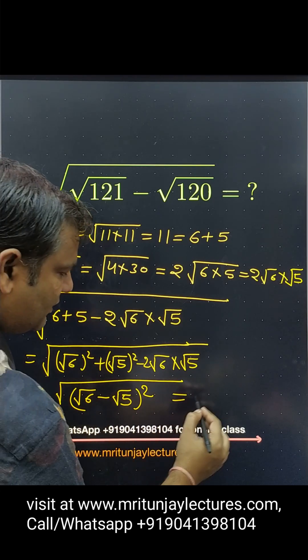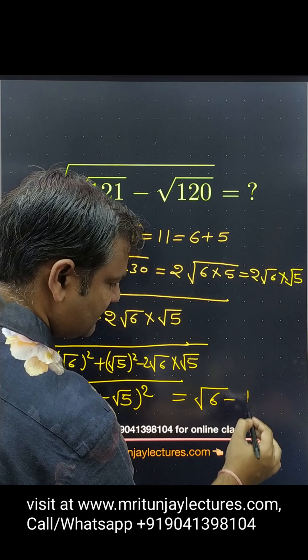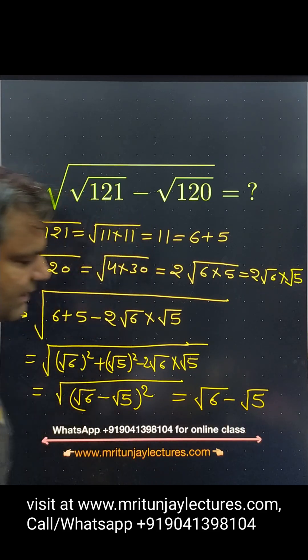So, finally, we got how much? Root 6 minus root 5 is the right answer. Okay, thank you.